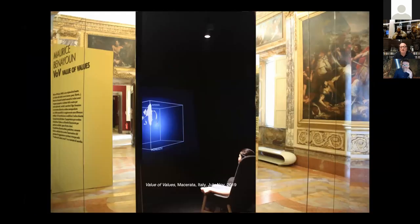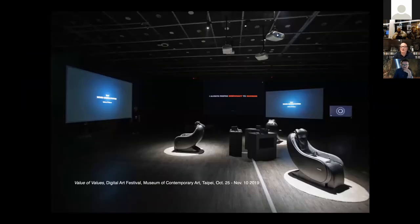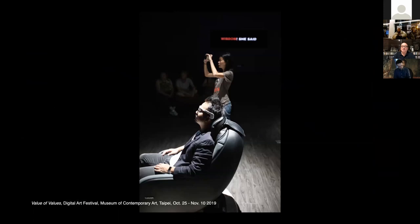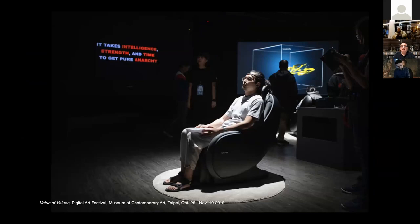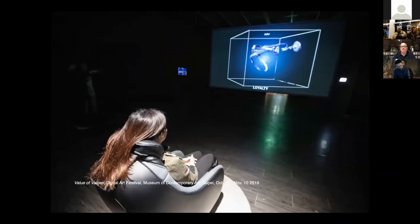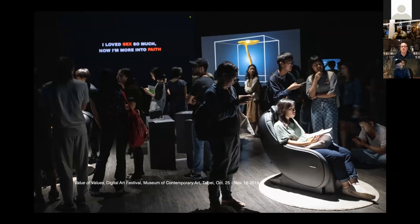And here is Macerata in Italy, where it was in Palazzo Buonaccorsi, where it was a very small space. And it was surrounded by mirrors, so we could see traditional paintings around. And this was in the Moca Taipei, where we had a big installation with three stations. And you could see the transactional poetry projected behind. And people could work on different models at the same time. This was the opening thing.